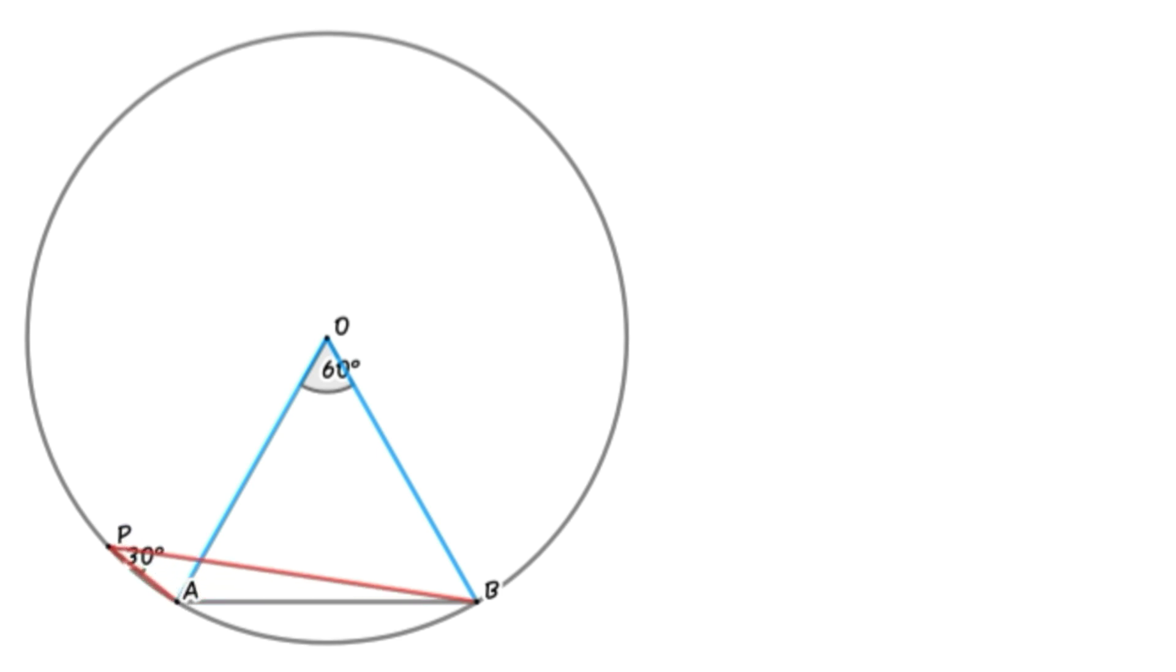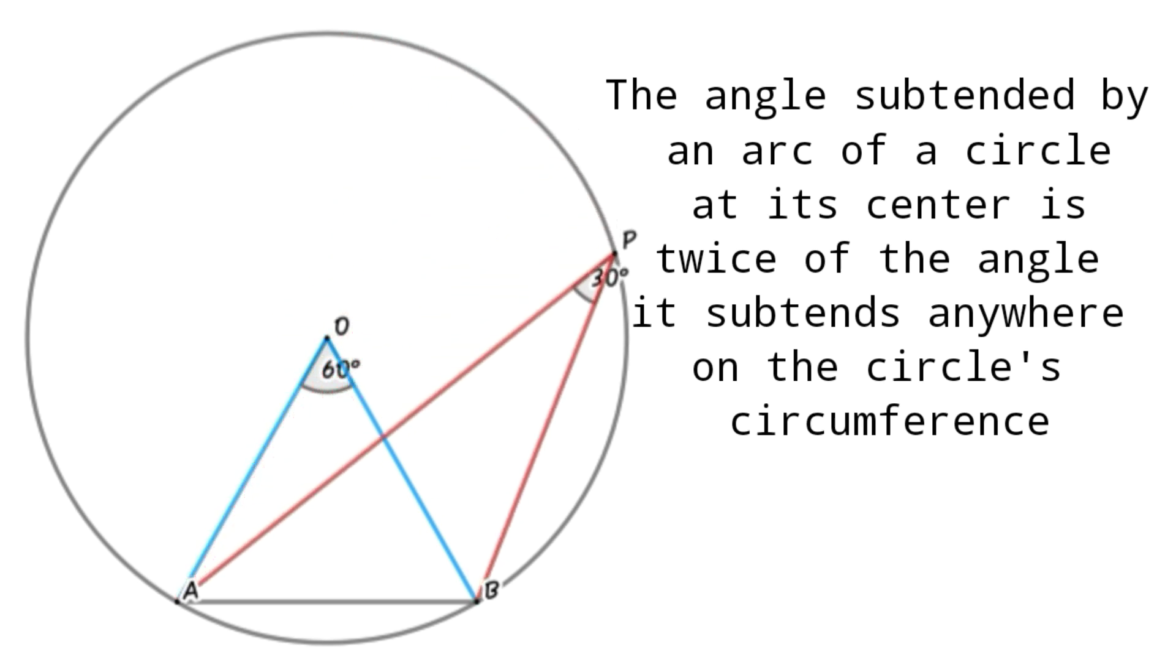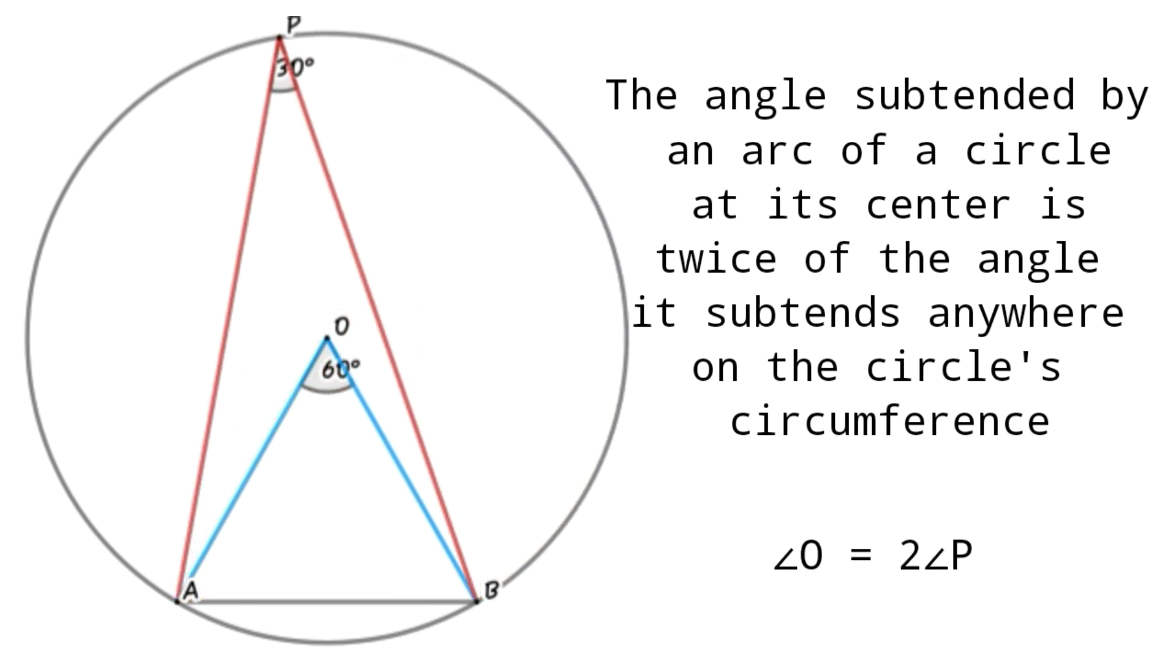Before solving the problem, we have to discuss one general theorem about circles. In a circle, the angle subtended by an arc at its center is twice the angle it subtends anywhere on the circle's circumference. That is, from the figure, angle O equals 2 times angle P.